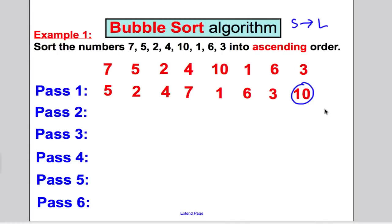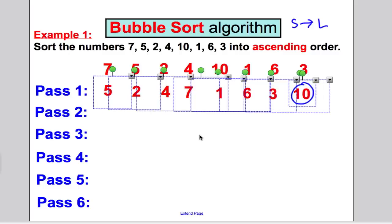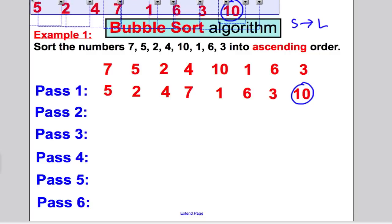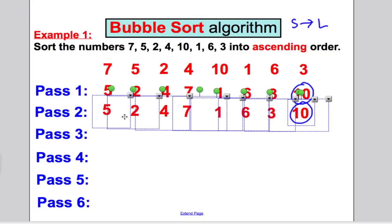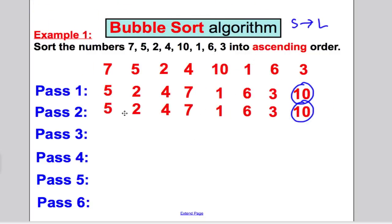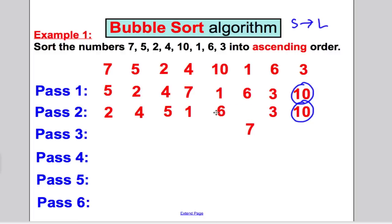You do another pass through the list swapping where necessary. Compare the first two — need to swap. These two — yes, they need swapping. Five is smaller than seven, no swap. One is smaller than seven, swap. Six is smaller than seven, swap. Three is smaller than seven, swap. Seven, the next biggest number, has been pushed to the back of your list. You don't need to compare with the ten anymore because you know ten's at the back.